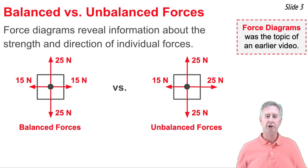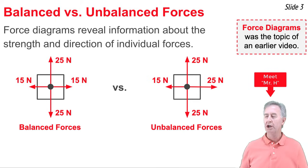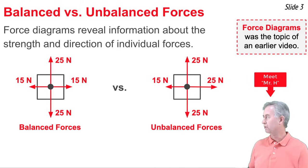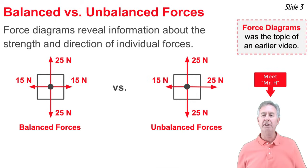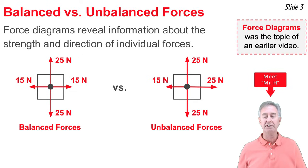In an earlier video, we discussed force diagrams. Force diagrams reveal information about the strength and the direction of the individual forces that act upon an object. We see two such force diagrams here. In the one on the left, the up force and the down force are of equal magnitude, and the right force and the left force are also of equal magnitude. We describe this situation as a balanced force situation.